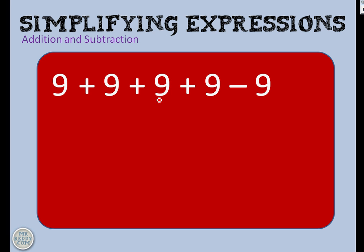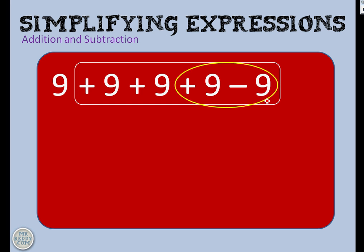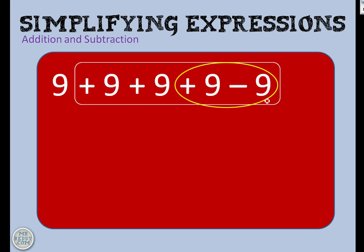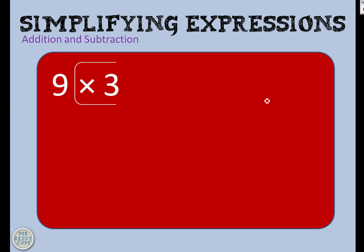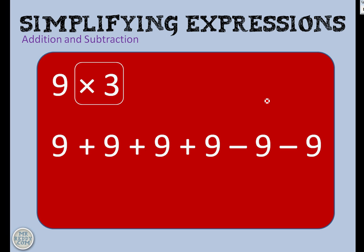Another one: 9 plus 9 plus 9 plus 9 plus 9 take away 9. When you add 9 and then take away 9, that's almost like you didn't add anything at all. If you add 9 but then take it away, you kind of didn't really add anything. So what are we left with once we get rid of them? We're left with 9 add 9 add 9, which we can shorten to 9 times 3.